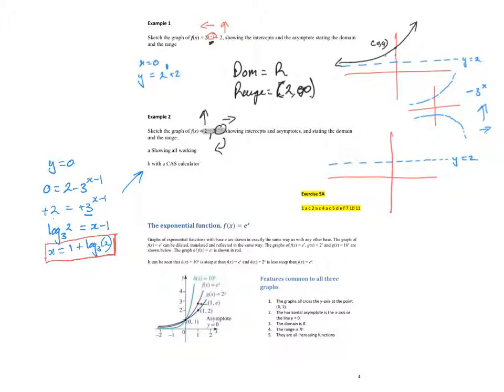To get the y-intercept, we put x = 0. So y = 2 - 3^(-1) = 2 - 1/3 = 5/3. The y-intercept is at (0, 5/3), and the x-intercept is at (1 + log₃(2), 0). When we sketch the graph, we know from the reflection that the graph has that shape - approaching the asymptote and going down through our intercepts.